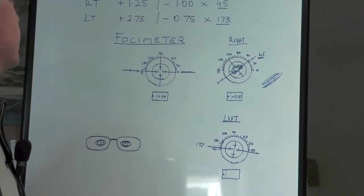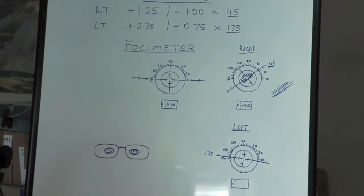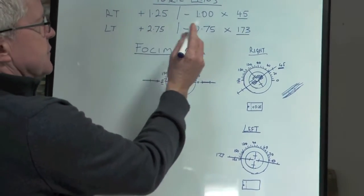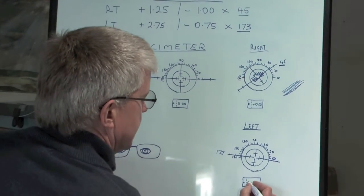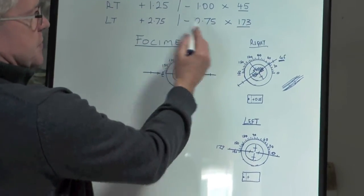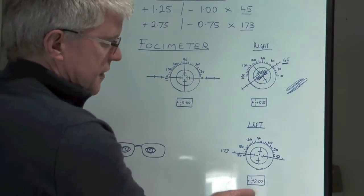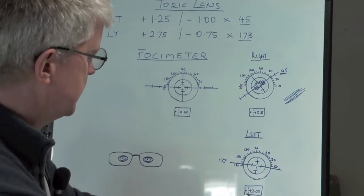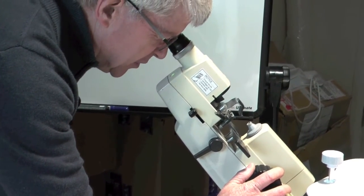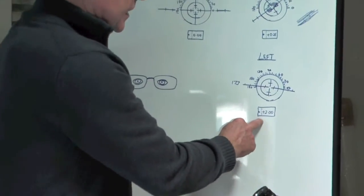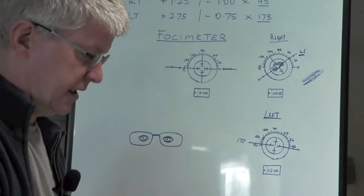We now need to do the same with the power. We need to put the correct power in there. If you add these two together, you've got plus 2.75 minus 0.75. If the signs are different, we take the smaller number away from the bigger number, and keep the sign of the bigger number. So the sign is a plus, and 2.75 minus 0.75 gives me plus 2. So I want to change the power dial on the focimeter to get plus 2.